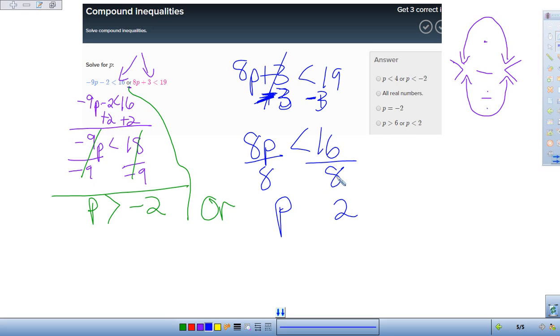No, I don't. I divide it by positive. Don't have to flip my sign. Divide by negative. I do have to flip my sign. So my sign is going to stay the same. So my answer is P is greater than negative 2 or P is less than 2.